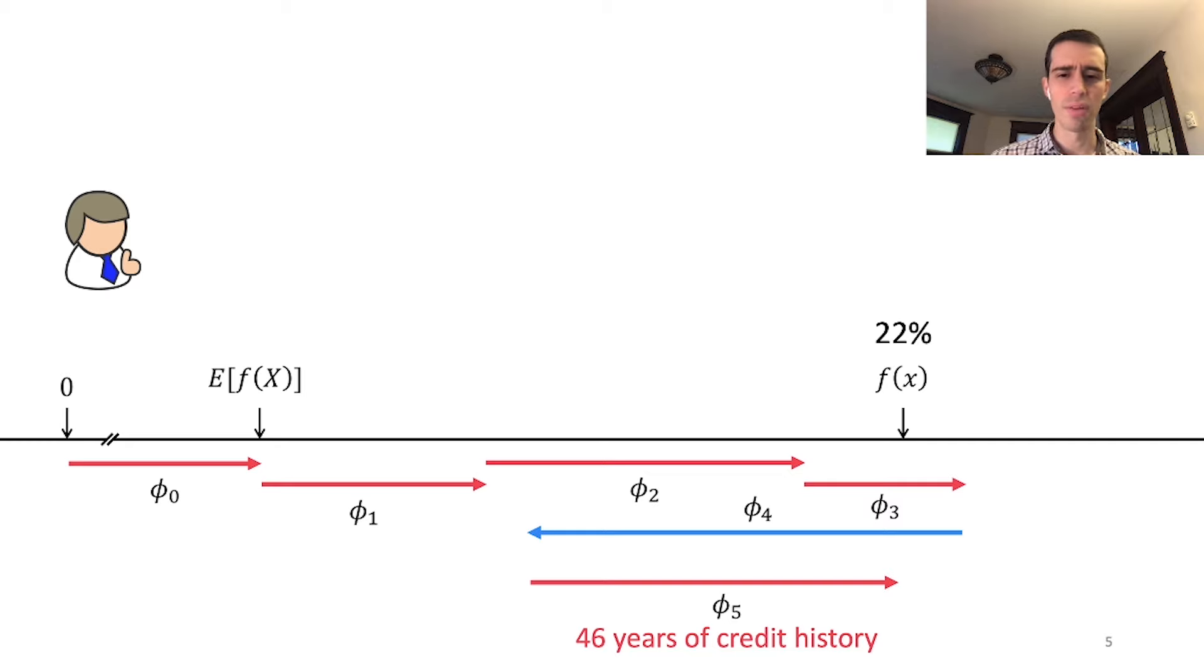Finally, we add that he has 46 years of credit history, which you'd think would be good. But ironically, this hurts him significantly and bumps his risk to 22%. We've filled out his entire application and arrived at the model's prediction piece by piece, attributing each piece to each feature. This explains how we got from knowing nothing about John to the model's final prediction.